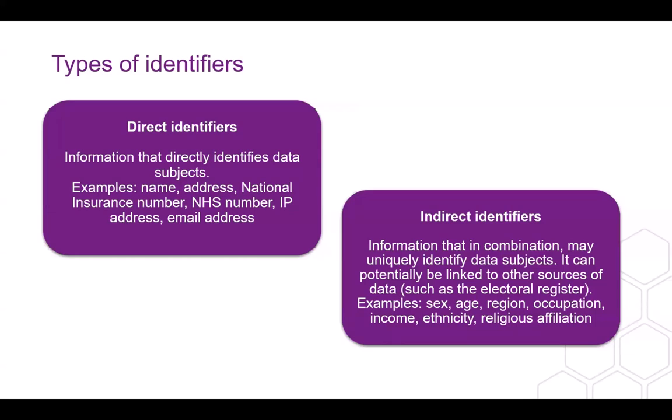We've added some common potential identifiers to this presentation. A key consideration is that often what's listed as a direct identifier, like a name, may not easily identify a person — for example, a common name like John Smith. The UK GDPR makes it clear that other factors can identify an individual, including one or more factors specific to the physical, physiological, genetic, mental, economic, cultural, or social identity of that natural person.